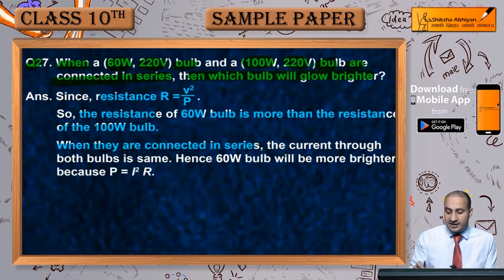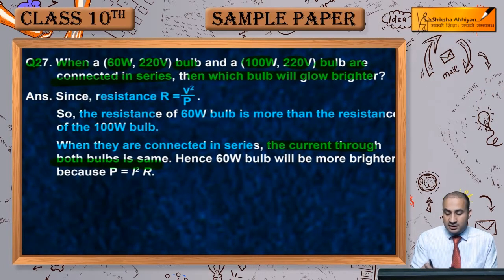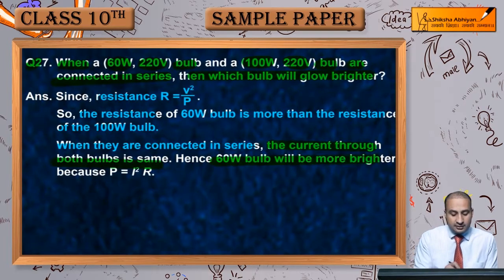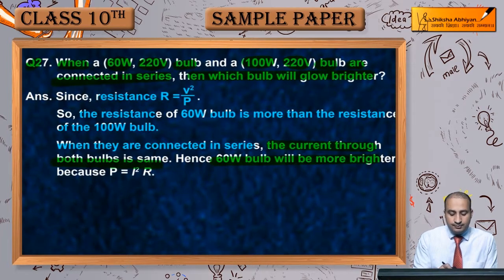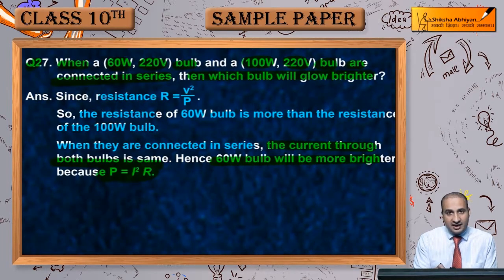When connected in series, the current through both bulbs remains the same. Since P is directly proportional to I²R, the bulb with more resistance dissipates more power. The 60 watt bulb has more resistance, so it will glow brighter.